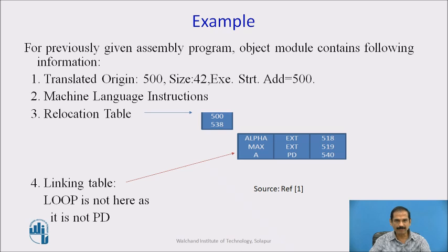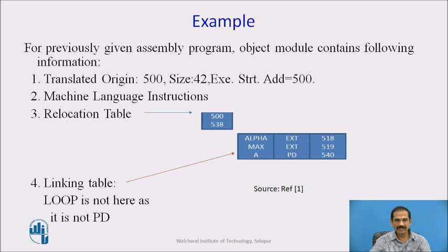For the previously given assembly program, the object module contains: translated origin 500, size 42, and external string starting at 500. For the machine language instructions given, we have the relocation table and the linking table with external and public definition addresses. Note that loop is not in the linking table as it is not a public definition.